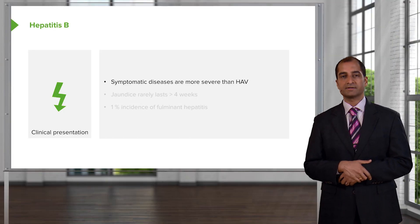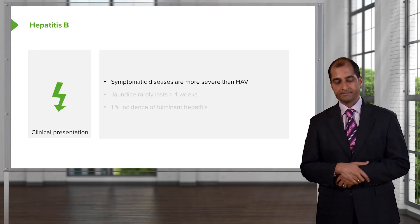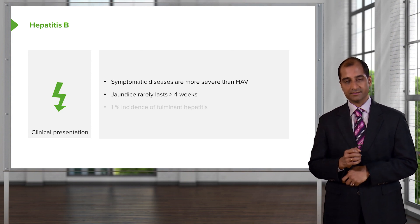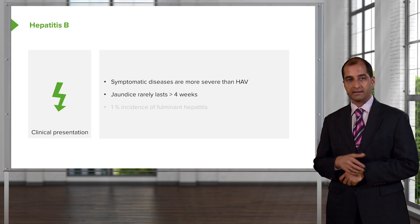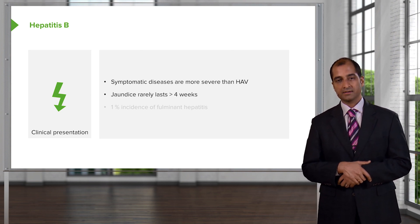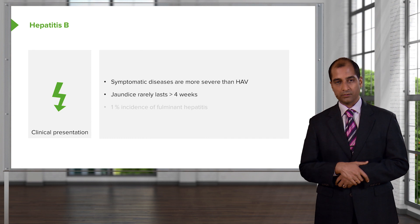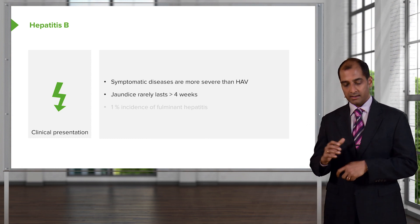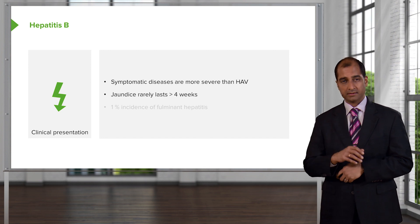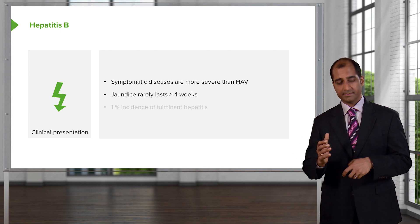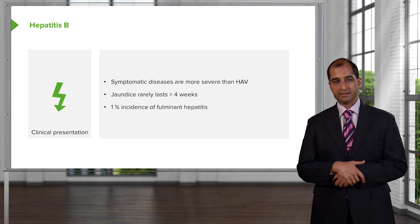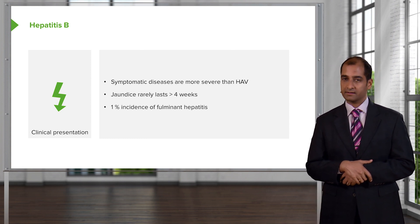Clinical presentation of hepatitis B: symptomatic disease is more severe than hepatitis A. Jaundice rarely lasts greater than four weeks, so if you find jaundice in a patient with hepatitis B, you're thinking about a timeline of approximately one month. There is a 1% incidence of fulminant hepatitis, thankfully.